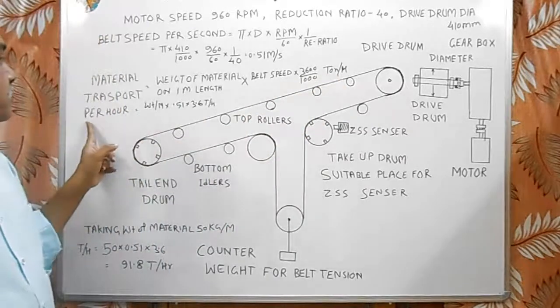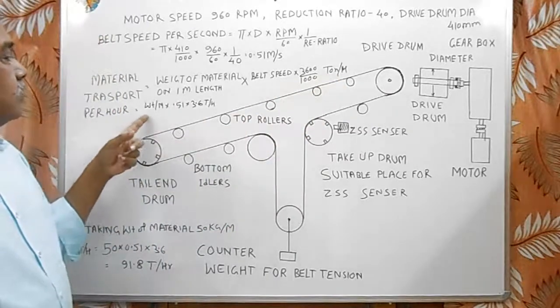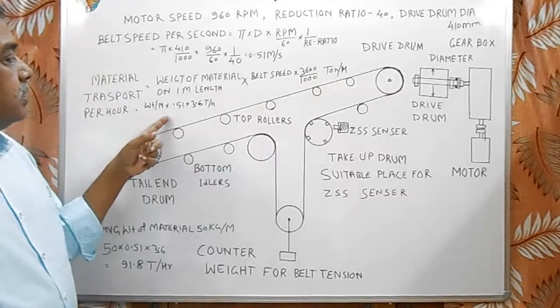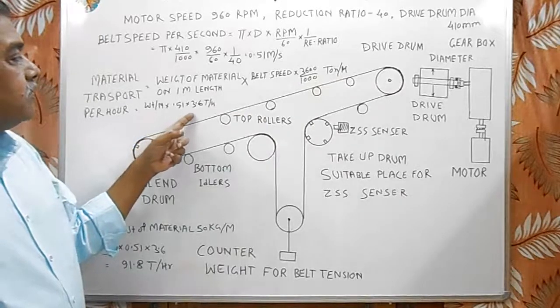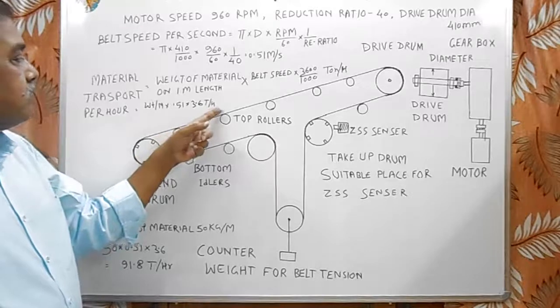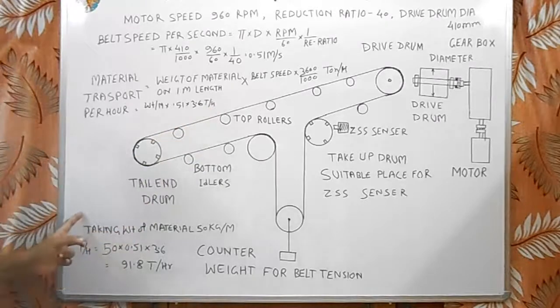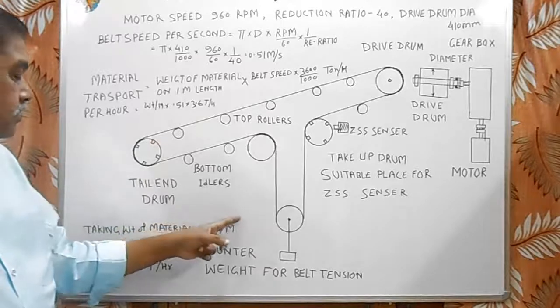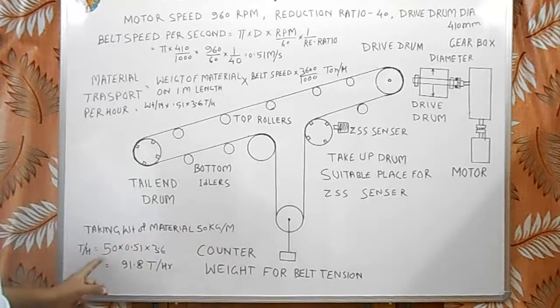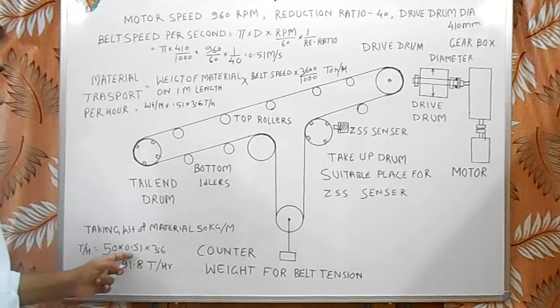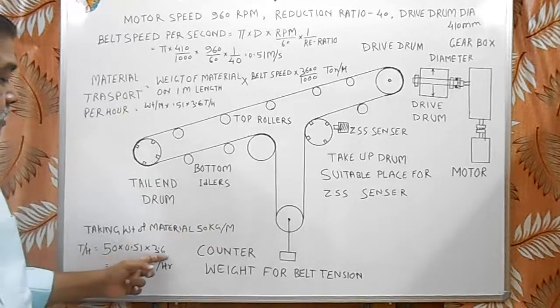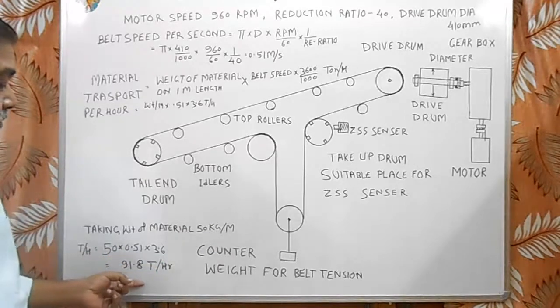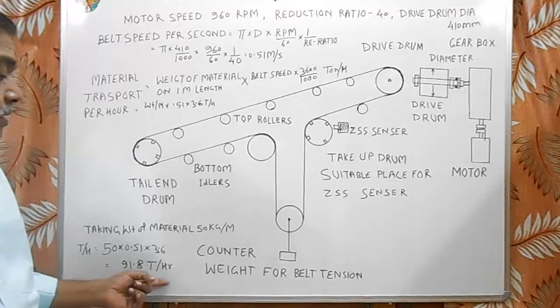Here, this is equal to weight per meter. We are taking weight of material 50 kg per meter. So, calculating tons per hour is equal to 50 into 0.51 into 3.6 is equal to 91.8 tons per hour.